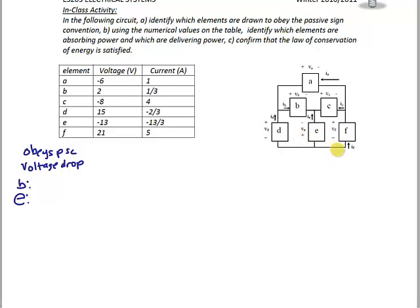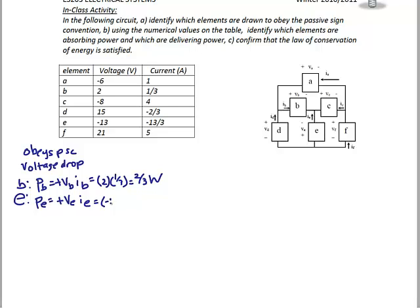Element F: current flows from negative to positive terminal — does not obey the passive sign convention. For elements that obey, we write: PB equals positive VB times IB, and PE equals positive VE times IE. So PB equals 2 times one-third, which is 2/3 watts. PE equals positive negative 13 times negative 13/3, which equals positive 169/3 watts.